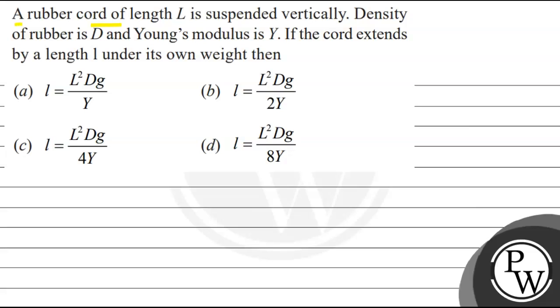The question says that a rubber cord of length L is suspended vertically. Density of rubber is capital D and Young's modulus is Y. If the cord extends by a length l under its own weight, then the options are: (a) l = L²DG/Y, (b) l = L²DG/2Y, (c) l = L²DG/4Y, (d) l = L²DG/8Y. We have to choose the correct option.